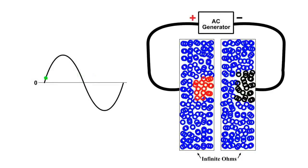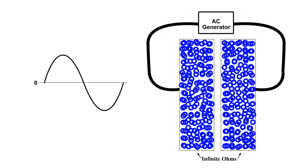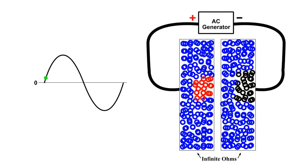Here I have added an AC generator. And the same rules apply. But what makes this difference is, the voltage keeps changing, in amplitude, and also in direction.